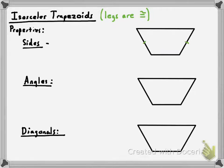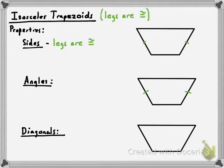There are special properties that isosceles trapezoids must have for their sides, angles, and diagonals that a non-isosceles trapezoid wouldn't have. One of those is that the legs are congruent — that's the property for the sides. What about the angles? It turns out that whenever the legs are congruent, the base angles are also congruent. Remember in an isosceles triangle the base angles are congruent? Same thing in an isosceles trapezoid — the base angles are congruent.